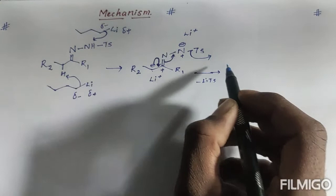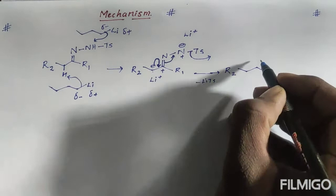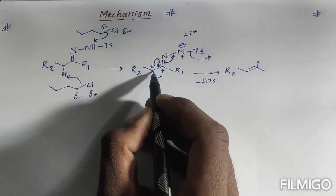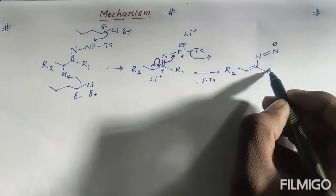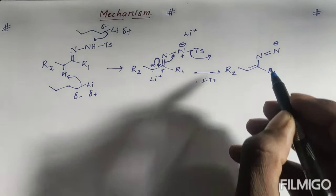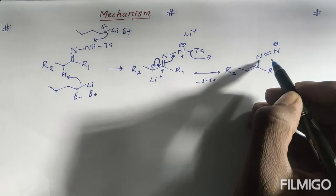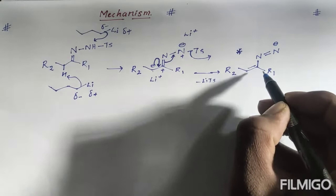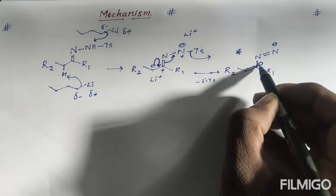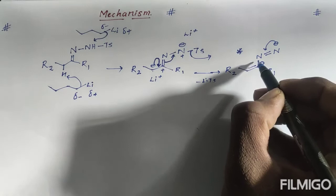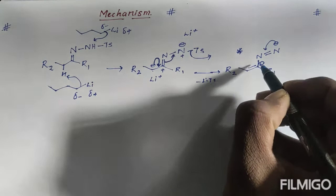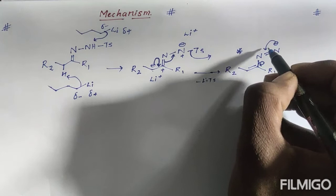After elimination of lithium tosylate, we have an intermediate: R2 single bond to a carbon with a double bond, and a double bond between nitrogen and nitrogen (a diazo-type intermediate), with a negative charge still on nitrogen and R1 here. This step is very important: the carbon takes the sigma bond electrons from the C-N bond, and the negative charge on nitrogen forms a triple bond.